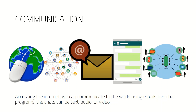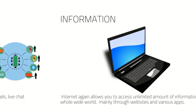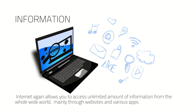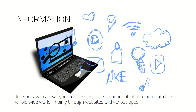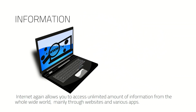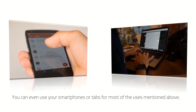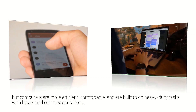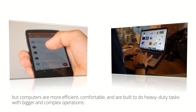Communication — accessing the internet, we can communicate with the world using emails and live chat programs. The chats can be text, audio, or video. The internet also allows you to access an unlimited amount of information from the whole wide world, mainly through websites and various apps. You can even use your smartphones or tablets for most of the uses mentioned above.